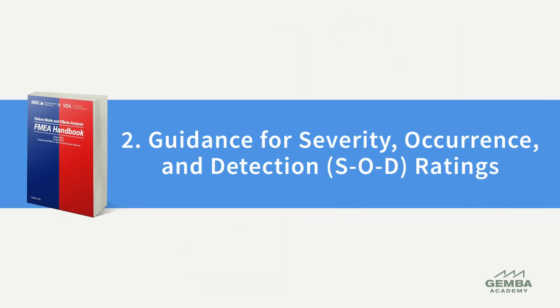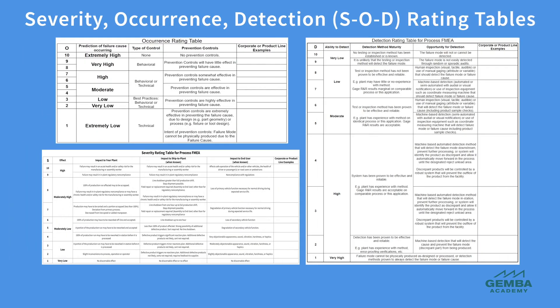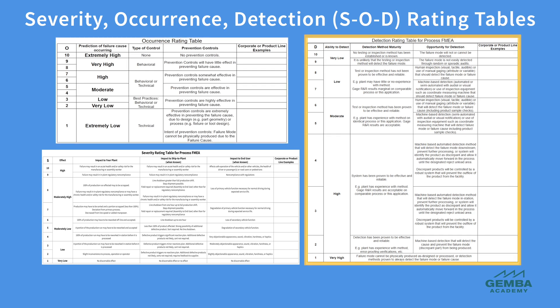The second major change is the additional guidance on assigning severity, occurrence, and detection ratings. Earlier FMEA versions also used these ratings, but often without much structured guidance or criteria, leading to potential variability in ratings between individuals and organizations. The AIAG VDA FMEA approach emphasizes the use of criteria tables as a basis for standardized assessment of severity, occurrence, and detection ratings across different users and organizations.